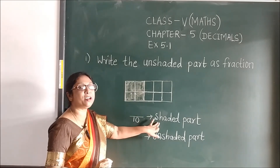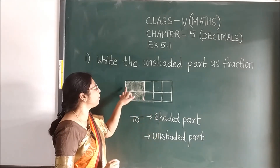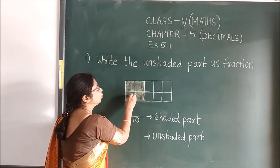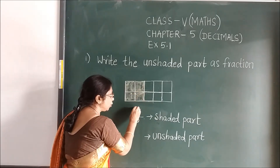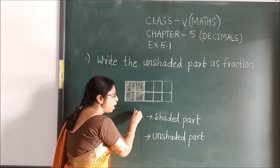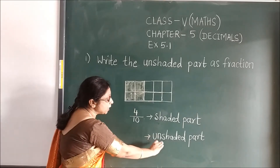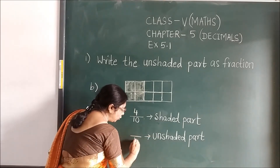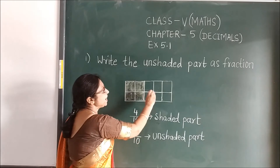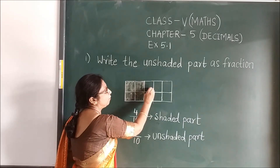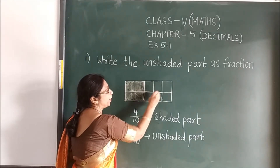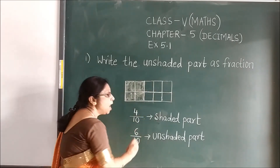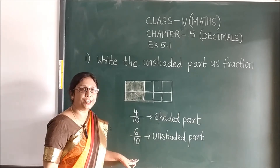And see the shaded part. Which part is shaded? How many? 1, 2, 3, 4. So you will write 4. Clear? Now the unshaded part — again you will write the total parts in the denominator. See unshaded: 1, 2, 3, 4, 5, 6. So 6 parts are unshaded.